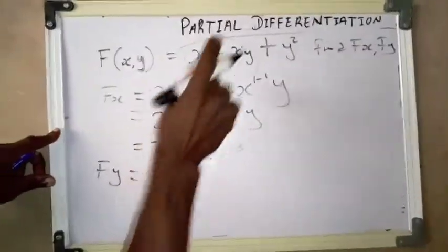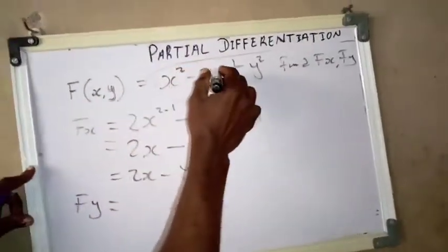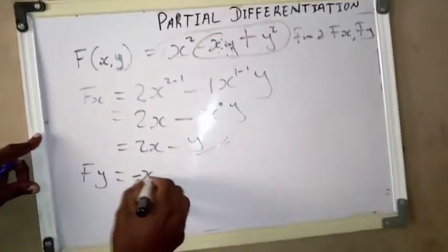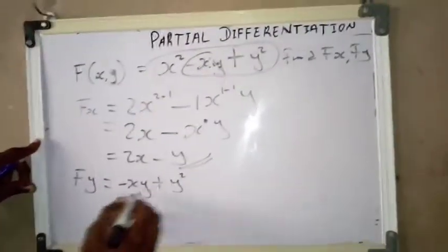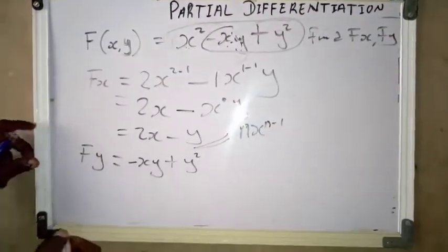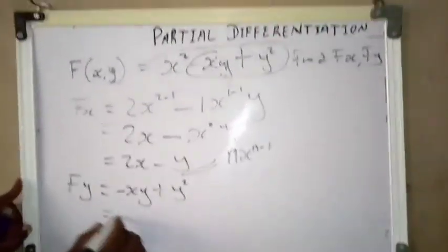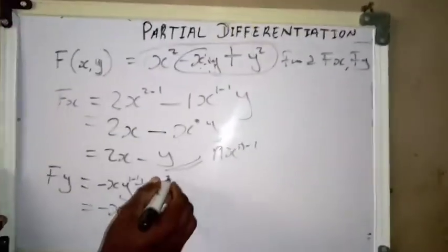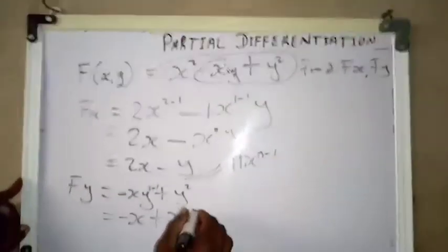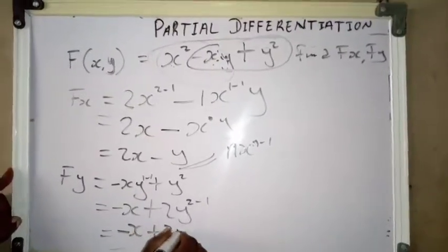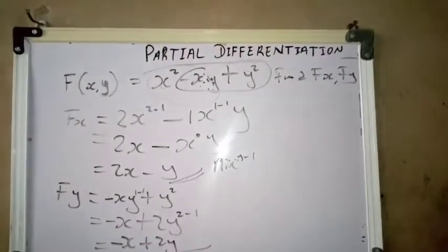For f_y, we differentiate only the terms containing y: minus x times y plus y squared. The general formula is n times x raised to n minus 1. Differentiating minus x times y gives minus x, since 1 minus 1 equals zero and any value to the power zero is 1. Plus, 2 comes to the front for y squared giving 2y raised to 2 minus 1. Our final answer for f_y is minus x plus 2y.